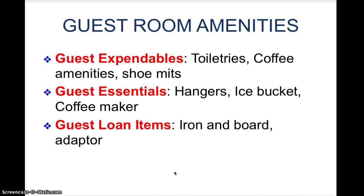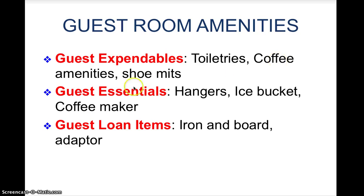The next topic is the guest room amenities. When you talk about amenities, most probably you will be thinking of the toiletries and the coffee amenities, but room amenities from the hotel's point of view have been categorized into three major categories: guest expendables, guest essentials, and guest loan items. The guest expendables are the items that guests take back — such as toiletries, coffee amenities, and shoe mitts.